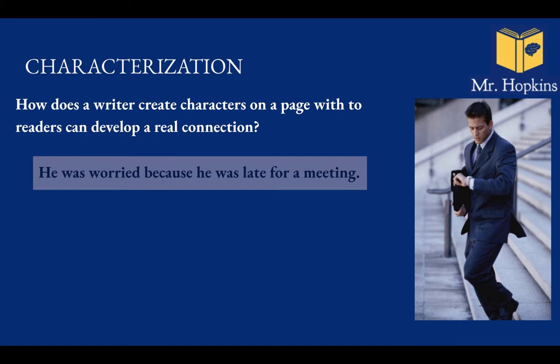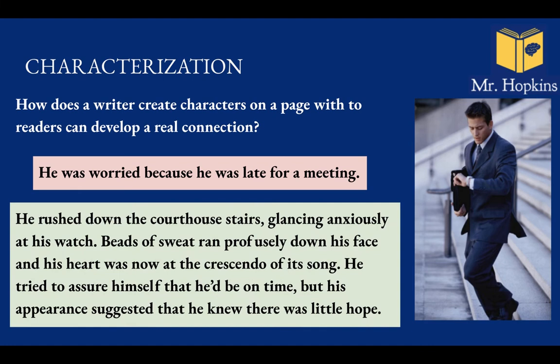Let's look at this sentence: 'He was worried because he was late for a meeting.' Very straightforward, to the point, I know what's going on, but I don't really feel a connection with the character. On the other hand, as the author wrote: 'He rushed down the courthouse stairs, glancing anxiously at his watch. Beads of sweat ran profusely down his face, and his heart was now at the crescendo of its soul. He tried to assure himself that he'd be on time, but his appearance suggested that he knew there was little hope.' Well, I now feel a much stronger connection with the character. I almost worry with him — I'm almost sweating, my heart's almost beating fast. I can empathise with the character a lot more because of good characterisation.